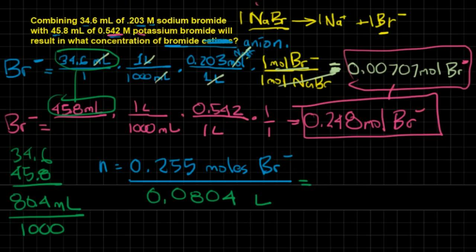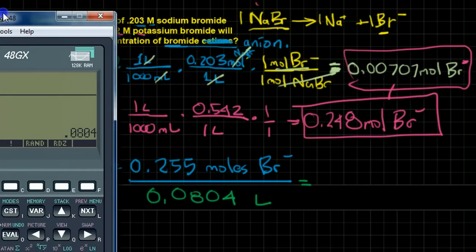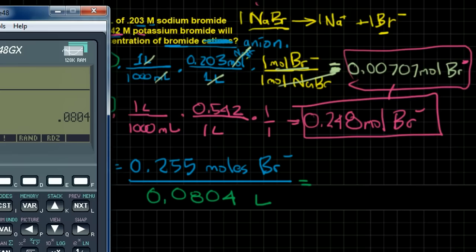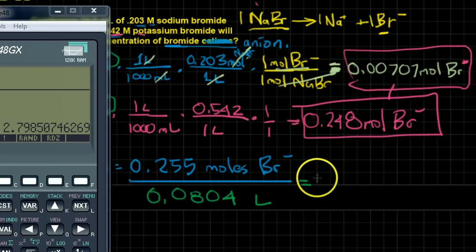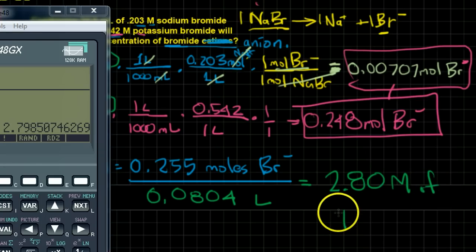And then that gives us a final answer of - I've got 0.255 on top and I'm going to divide the two of them. And my final answer is to three significant figures 2.798. Well 2.79. This would round up which is going to bump this up. So that's going to be 2.80 molars of bromine anions. And that's your answer. You're there.